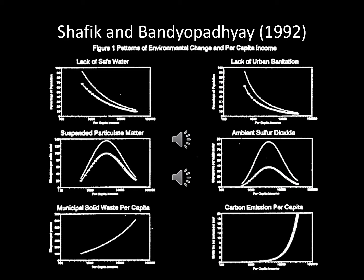Shafiq and Bandyopadhyay (1992) studied 10 different pollutants. From these 10 pollutants, only two air pollutants showed a path that seemed in line with the environmental Kuznets curve: sulfur dioxide and suspended particles — both pollutants of local air quality with effects on human health.